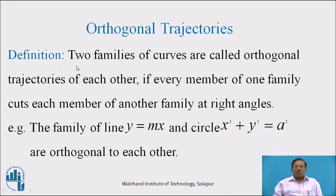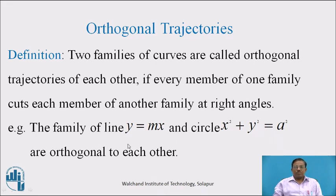Definition: Two families of curves are called orthogonal trajectories of each other if every member of one family cuts each member of another family at right angles. For example, the family of straight lines y = mx and the family of circles x² + y² = a² are orthogonal to each other. When we trace these two curves in the x-y plane, we can see how they are orthogonal to each other.